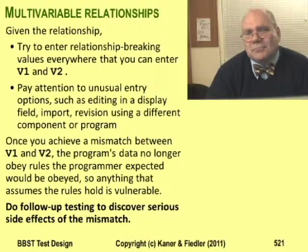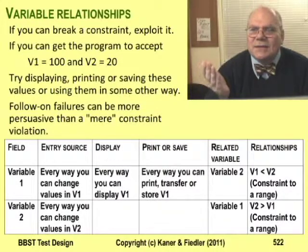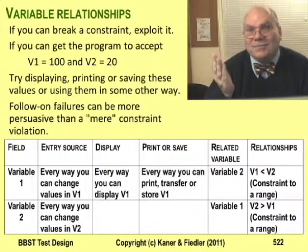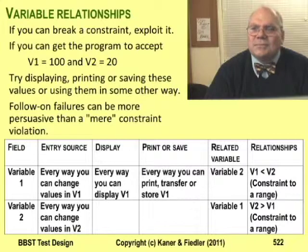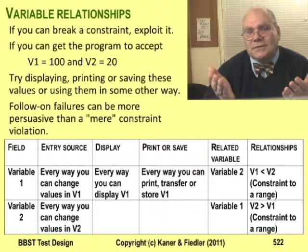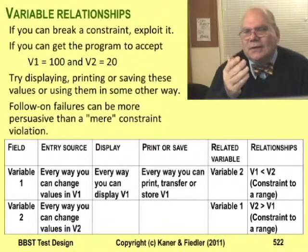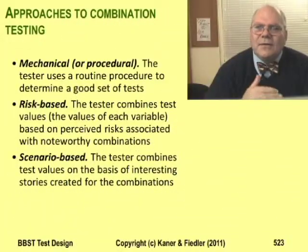Maybe the programmers will consider it important, maybe not — maybe they'll just tell you don't do that. But now that you've broken the constraint, that's where the fun starts. The program shouldn't have accepted these values; it's now in a state that it should never have reached, so its behavior from here is unpredictable. Now try to display, print, and save the variables, especially where the program displays or prints them together. The program might fail when it attempts this, or it might display values that are obviously unreasonable. These failures can be much more significant to the stakeholders than a simple input constraint violation.